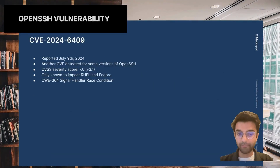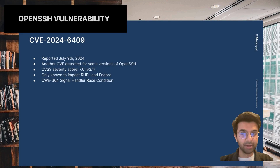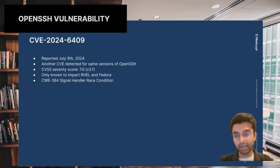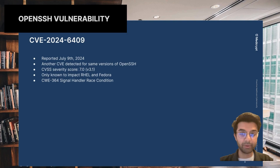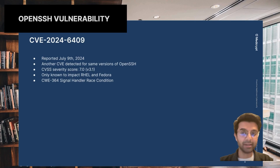regreSSHion isn't the only vulnerability against OpenSSH. Today, on July 9th, CVE-2024-6409 was published. It's a vulnerability against the same versions of OpenSSH as regreSSHion, and it has a severity score of 7.0. Currently it's known to have less impact — it only impacts Red Hat Linux and Fedora and is assigned one CWE.